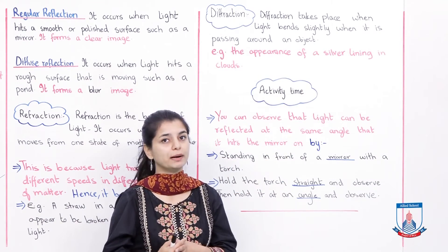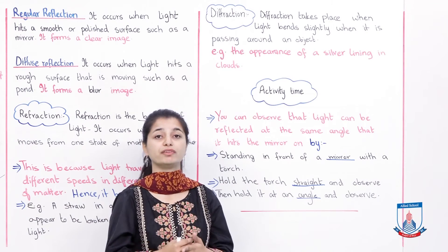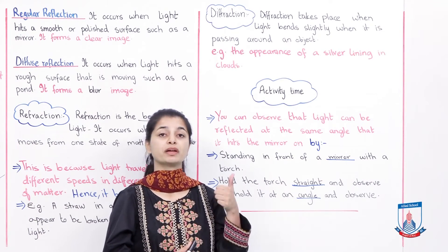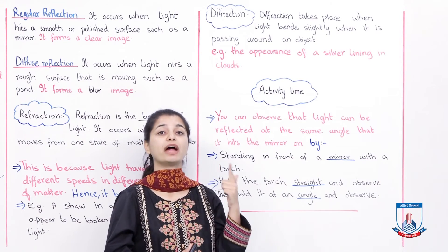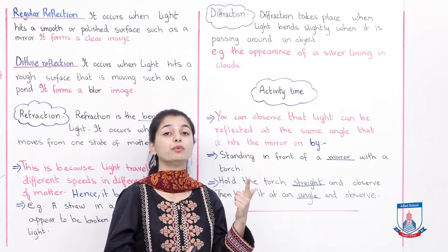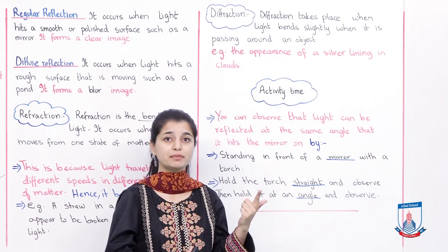So we have three ways in which light behaves differently: reflection, which is bouncing back; refraction, which is bending because light moves from one state of matter to another; and diffraction, which is slight bending when light passes around an object.